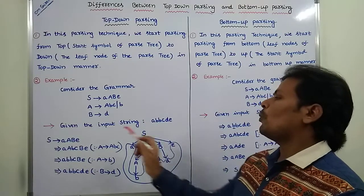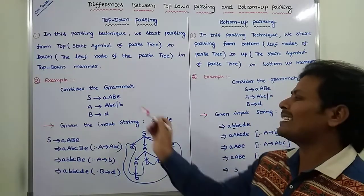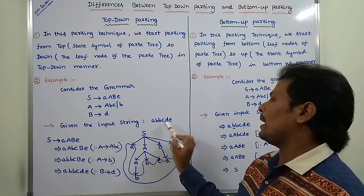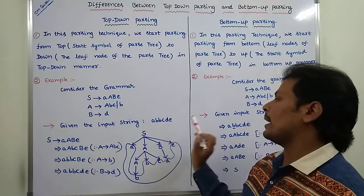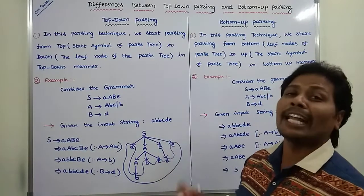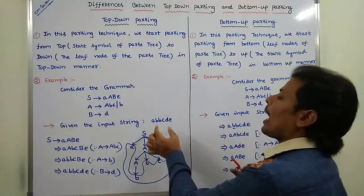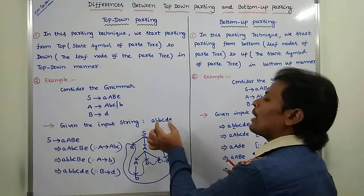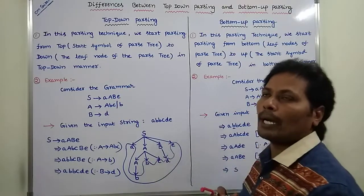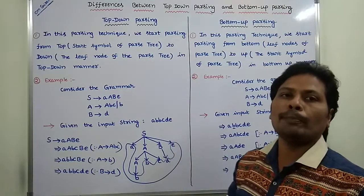The input string to derive from this grammar is: a, b, b, c, d, e — all terminal symbols. We have to derive this string by using this grammar using top-down parsing.